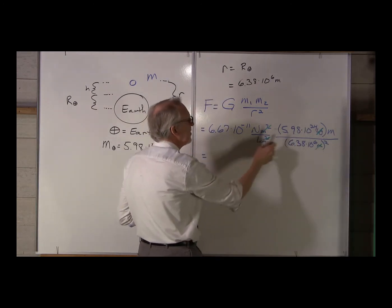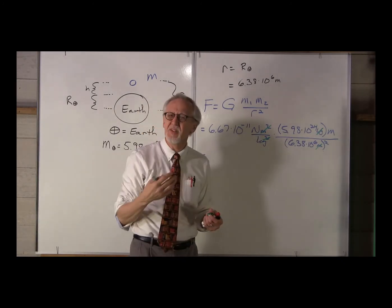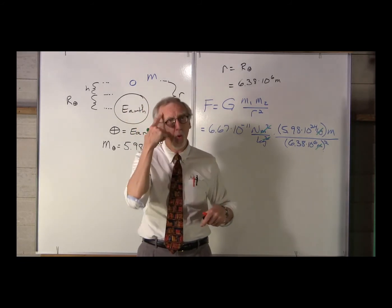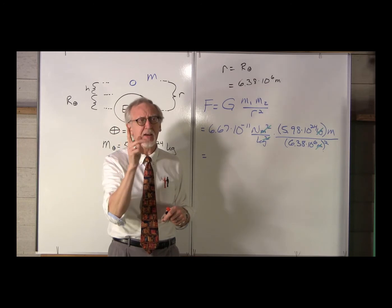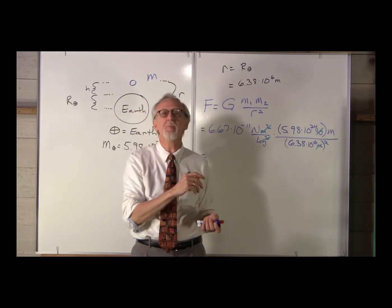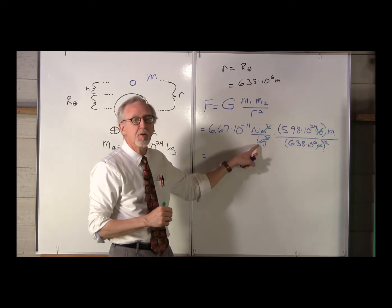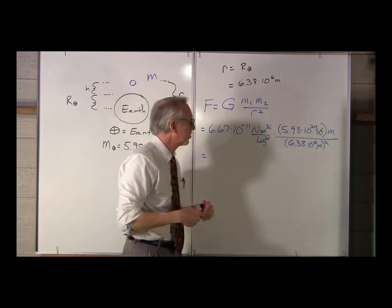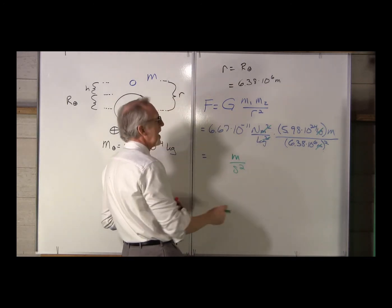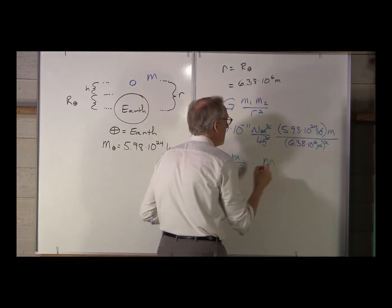What is a newton? A newton is a force. A force is M times A — mass is a kilogram, acceleration is meters per second squared — so a newton is a kilogram meter per second squared. Divided by a kilogram leaves us with meters per second squared. So the units are going to be meters per second squared, times M, the mass of our object.